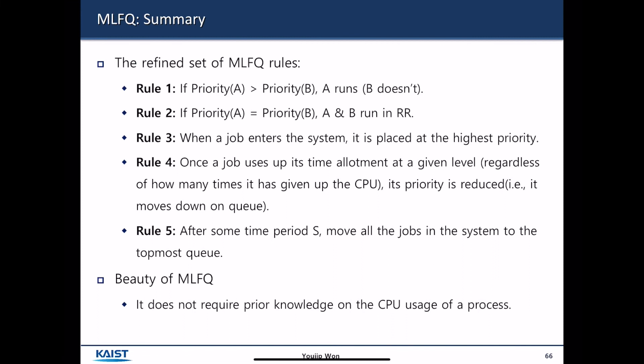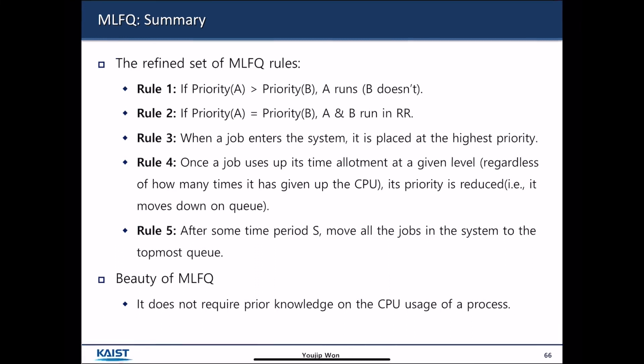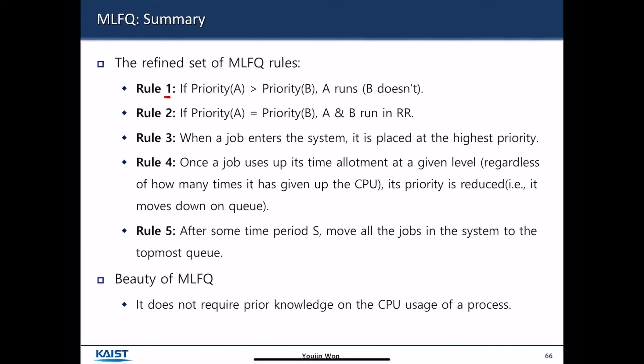Okay, let's summarize MLFQ. There are a set of rules. Rule number one: If a process has a higher priority, then it runs. If the two processes have the same priority, they run in round-robin fashion. When a job enters the system, it is placed at the highest priority level. Once the job uses all its time quantum at the given level, it goes down to the next priority level. After some time period, move all the jobs in the system to the topmost queue. So finally, what is the beauty of MLFQ? It does not require any prior knowledge on the CPU usage of a process.